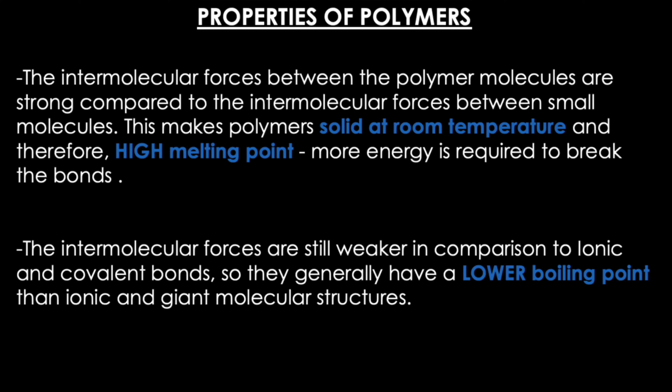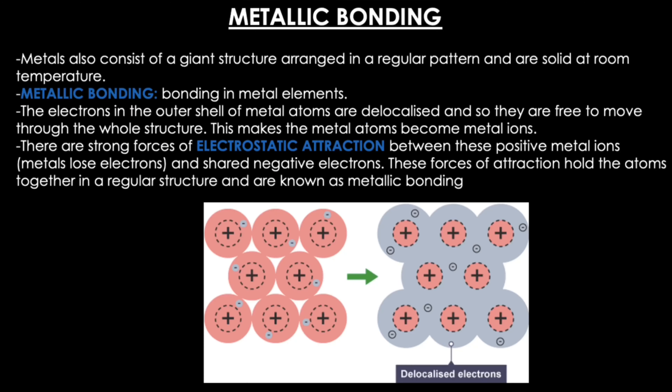Properties of polymers: the intermolecular forces between polymer molecules are strong compared to those between small molecules. This makes polymers solid at room temperature and gives them a higher melting point, as more energy is required to break the bonds. However, the intermolecular forces are still weaker compared to ionic and covalent bonds, so polymers generally have a lower boiling point than ionic and giant molecular structures.